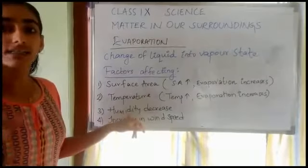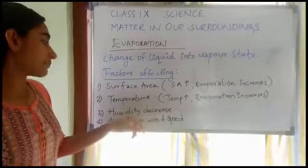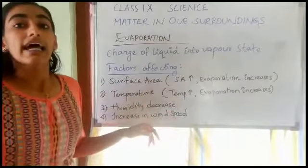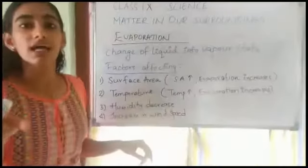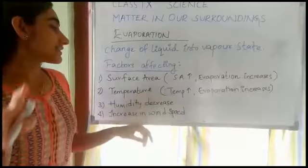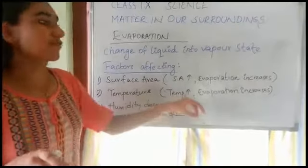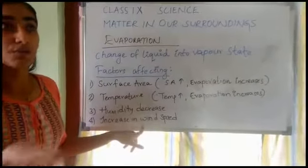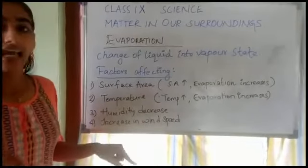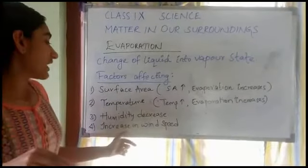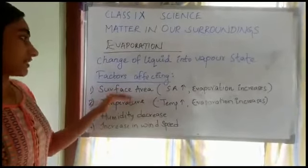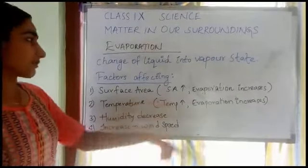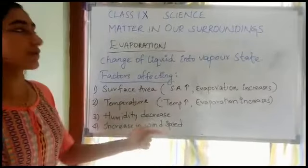Humidity is the amount of moisture present in the air. When humidity decreases, evaporation increases, because the air around us cannot hold more than a certain amount of water vapor at a given temperature. Next is wind speed: when you put clothes to dry on a windy day, the particles move with the wind, so when wind speed increases evaporation increases. To summarize: surface area increases → evaporation increases; temperature increases → evaporation increases; humidity decreases → evaporation increases; wind speed increases → evaporation increases.